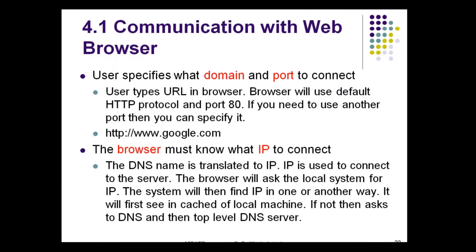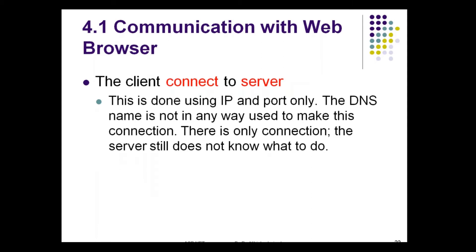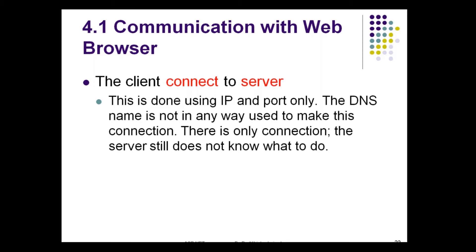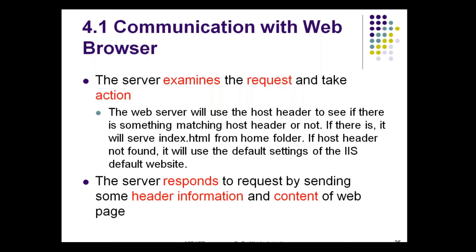Communication with the web browser contains six steps. First, the user will specify the domain and port to connect. After that, the browser must know what IP to connect. Third, the client connects to the server if the IP address and port number is known. Fourth, the client sends a request message using HTTP protocol. Fifth, the server examines the request and takes action. And sixth, the server responds by sending some header information and the content of the web page.